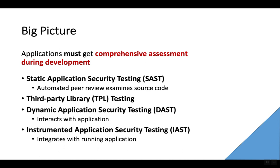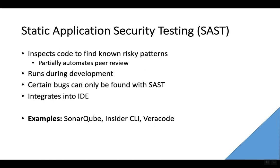Overall, applications have to get a comprehensive security assessment during the development process. This means that we will have the proper types of assessment at the proper time in the development process in order to find the different kinds of security issues that can occur. Different types of testing are ideally suited for finding certain types of security problems as early as possible. We're going to take a look at four. Static application security testing tools will examine the source code and, based on what they see, identify patterns that are well-known to lead to security issues.